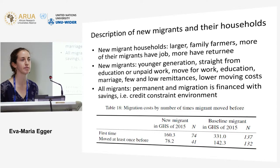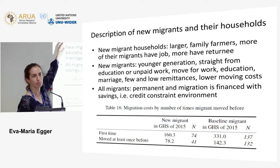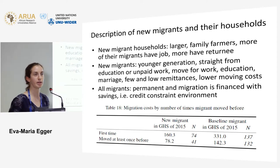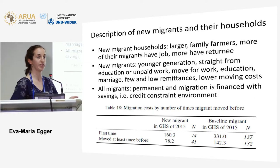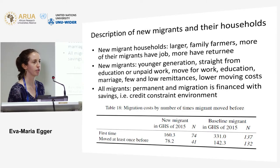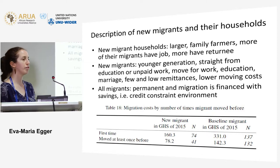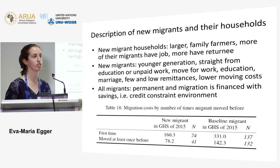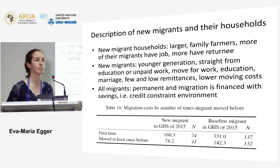From the descriptive analysis, households with a new migrant compared to those without are much larger on average — by two household members — which makes sense, since you need enough people at home to be able to send another person. They are mostly family farmers, gaining most income from their own farm. Relatively more of the migrants from these households have a job at the destination compared to those without a new migrant, and relatively more also have a return migrant, suggesting that migration is a very common pattern in these households.